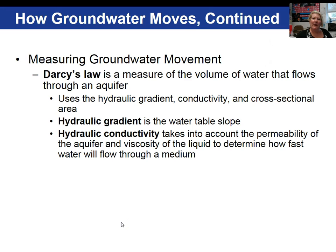If groundwater has been contaminated with a chemical and you want to know how fast it's moving, we can use Darcy's Law to measure the volume of water flowing in an aquifer. The components of Darcy's Law include calculating hydraulic gradient, determining the conductivity of the material, and determining the cross-sectional area of the aquifer.